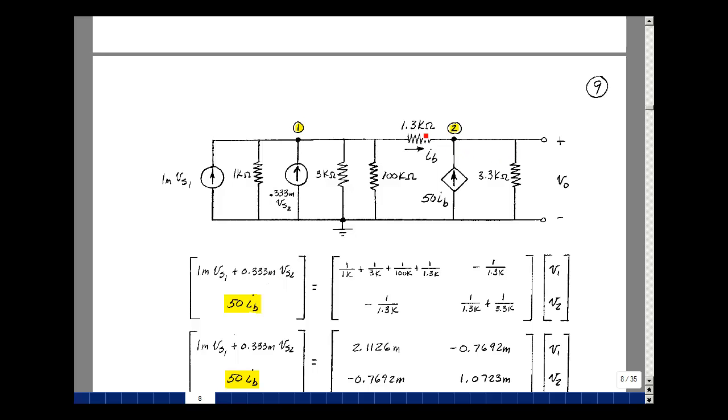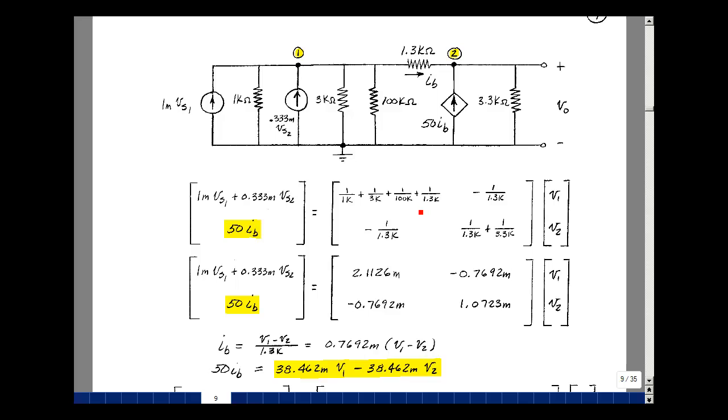Go to node 2. I just have two resistors connected here, so I'm going to sum the conductances, 1 over 1.3k and 1 over 3.3k. And then between nodes 2 and 1, I have the same resistor, so minus 1 over 1.3k. But now I've got my dependent source entering node 2. It goes into row 2, column 1. On the left-hand side of the equation is just the currents entering, in this case node 2, which is 50i sub V.